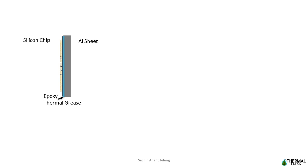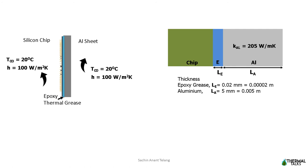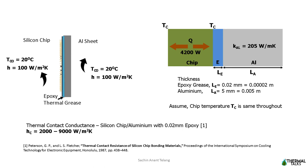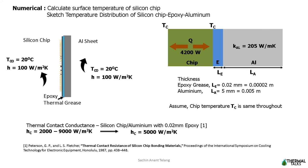So let us understand this better by solving a problem. Here we have an electronic chip attached to aluminum frame by epoxy grease. This setup is exposed to surrounding ambient air at 20 degrees Celsius with convective heat transfer coefficient h equals 100 Watt per meter square Kelvin. The 5 mm thick aluminum sheet has a thermal conductivity of 205 Watt per meter Kelvin and a very thin layer of epoxy grease, 0.02 mm, is attached between electronic chip and aluminum sheet. The electronic chip is dissipating 4200 Watt of energy which keeps its surface temperature same throughout. The thermal contact conductance value for silicon aluminum with 0.02 mm epoxy is in the range between 2000 to 9000 Watt per meter square Kelvin. I have chosen 5000 as the value for my calculation. So let us evaluate the surface temperature of the silicon chip and sketch the temperature distribution.